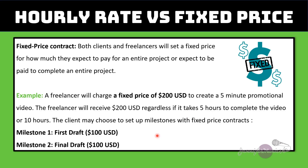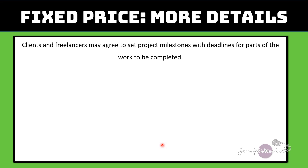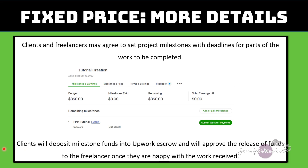Some clients like to set up milestones. For example, a client might say: I will give you $100 for milestone one for the first draft of the video, then approve that, and then set up a second milestone for another $100 for the final draft. Clients and freelancers may agree to set project milestones with deadlines for parts of the work to be completed. Clients deposit milestone funds into Upwork escrow and approve the release of funds to the freelancer once they are happy with the work received.